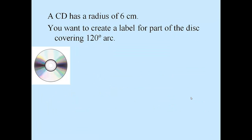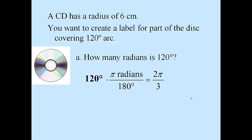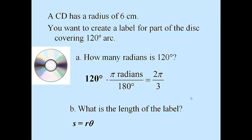Let's look at a more practical example where the angle is given in degrees — we have to convert it to radians first. A CD has a radius of 6 centimeters, and you want to make a label covering 120 degrees of the arc. How many radians is 120 degrees? Multiply by the conversion factor: 120 times π/180 gives 2π/3 radians. Now using the arc length formula, s = rθ: 6 centimeters times 2π/3 radians equals 4π centimeters, or approximately 12.6 centimeters.